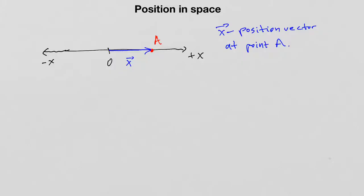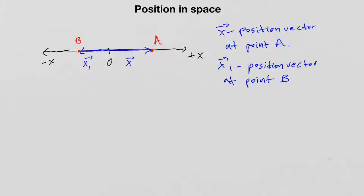Similarly, I can have a completely different point somewhere else on the coordinate system — for example, point B. I can assign a different position vector, let's call it X1, which is the position vector at point B. I can use position vectors to define the position of a moving object at different times during the motion.